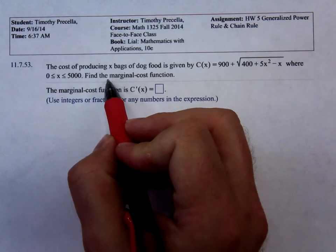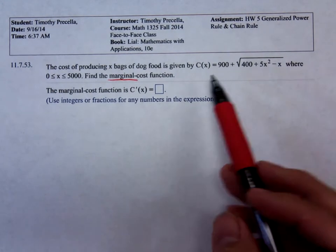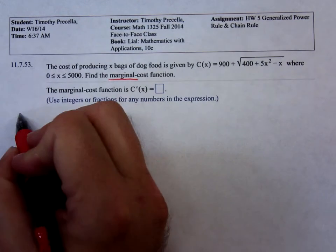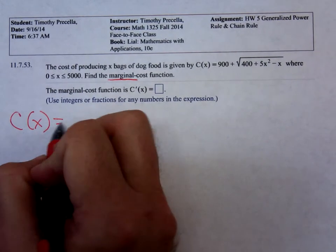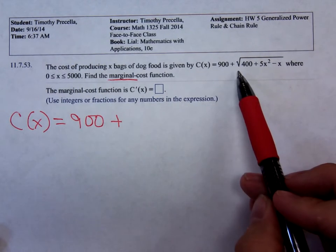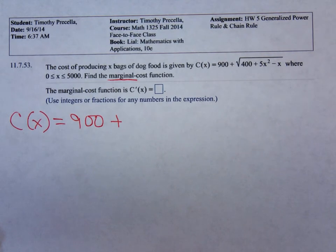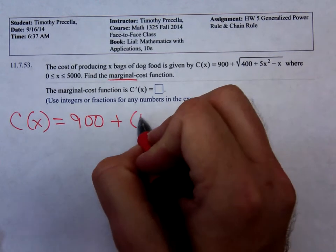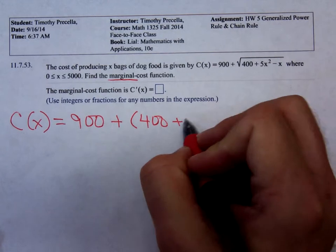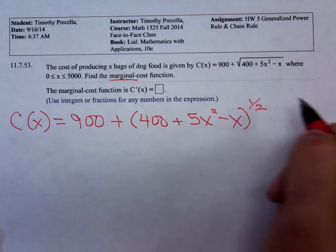Okay, marginal - when you see that phrase marginal, what should you think? The derivative, so we're going to have to find the derivative of the cost function. Let me write down that cost function. We have 900 plus, uh-oh, if we're going to differentiate a radical what do we need to do? Rewrite it using an exponent, so it's (400 + 5x² - x) to the one-half power.